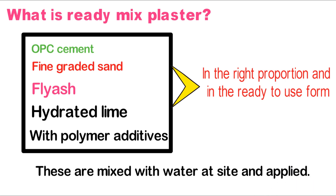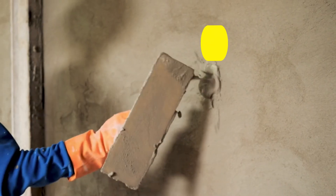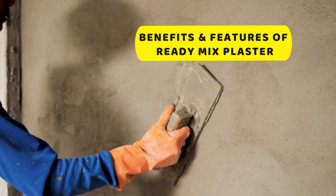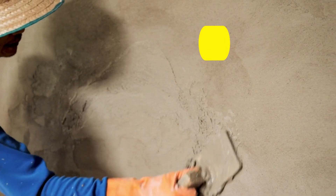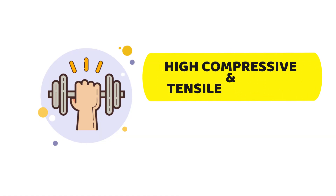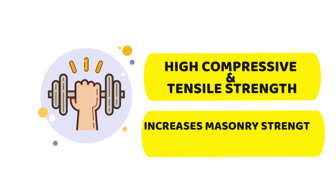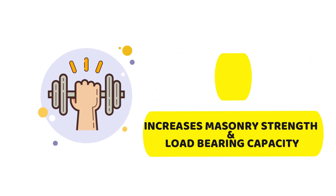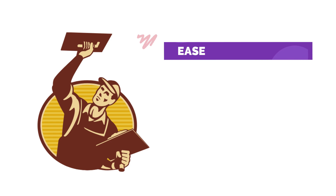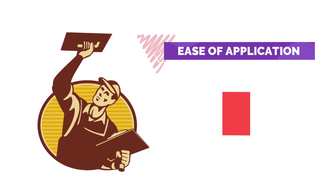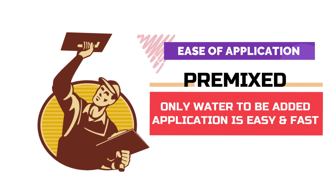What are the benefits and features of ready mix plaster? They have high compressive and tensile strength, which increases masonry strength and load bearing capacity. Next is ease of application — they are pre-mixed and only water needs to be added, making application very easy and fast.